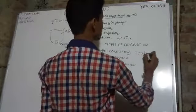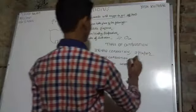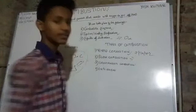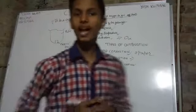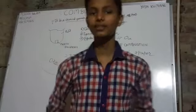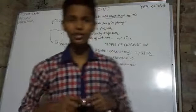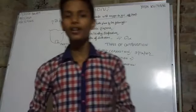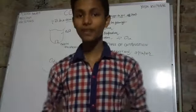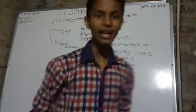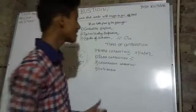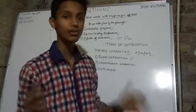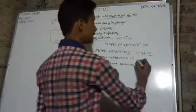The second type is slow combustion — any substance which starts burning very slowly. An example is wood, which burns very slowly.